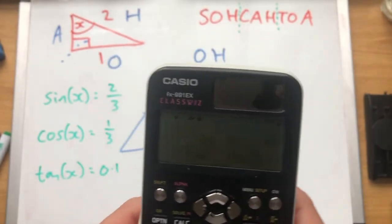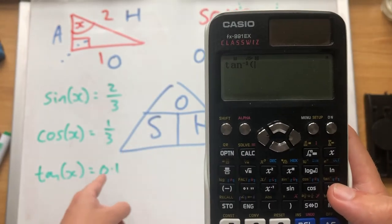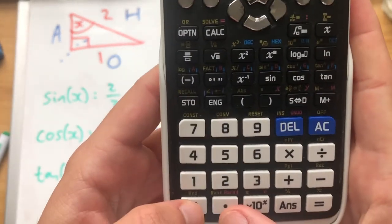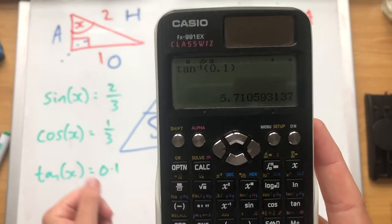Tan x equals 0.1. So we're going to do shift tan, tan to the minus 1, tan x equals 0.1. So tan to the minus 1, 0.1. And that's how we do it, 5.71.